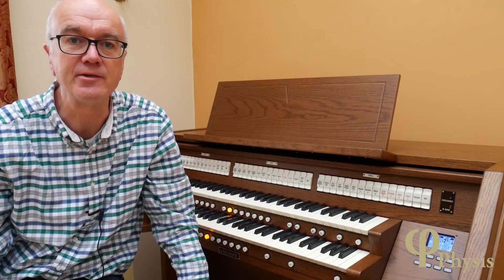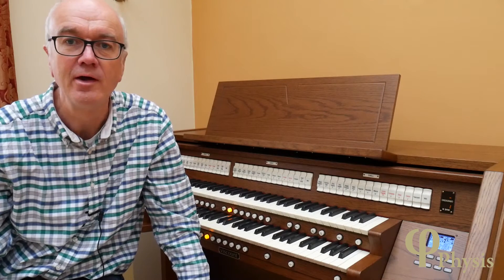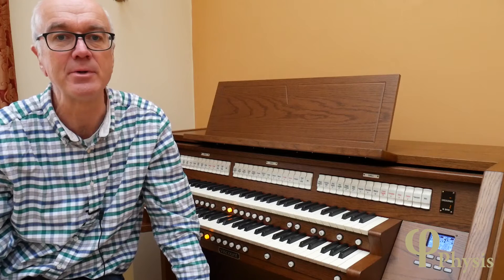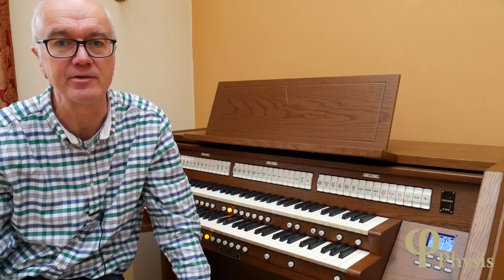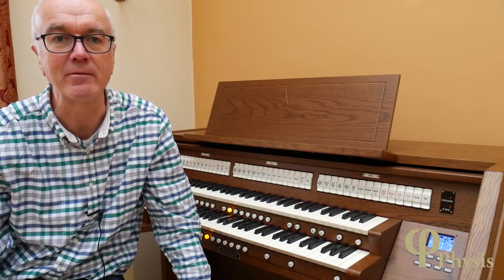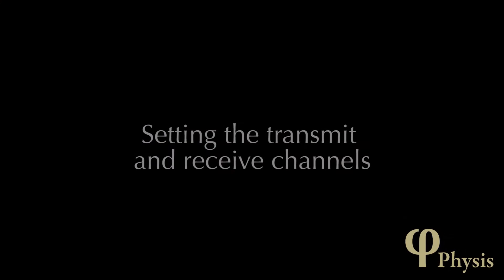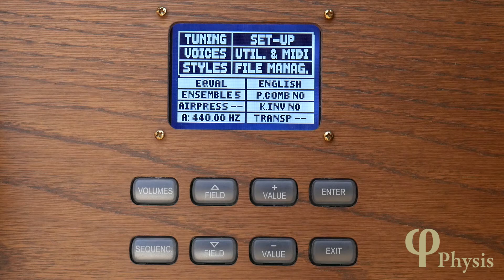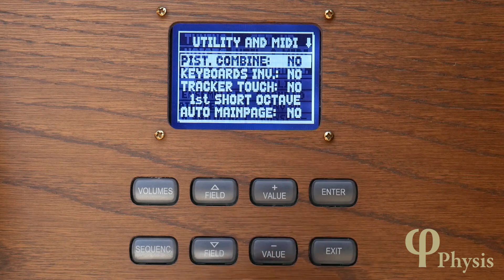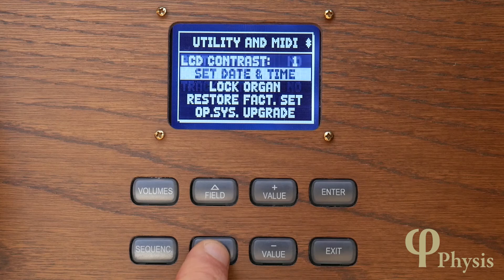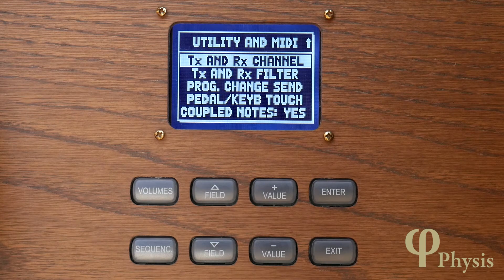In order to make external devices work correctly with your organ, various MIDI settings may have to be made on both transmitting and receiving devices. This will ensure that the MIDI information controls the thing you want it to and not something else. The organ's MIDI setup is found at the bottom of the Utilities and MIDI menu. Scrolling down to the third screen, the first option is TX and RX channel, which sets the transmit and receive channels for different divisions of the organ.